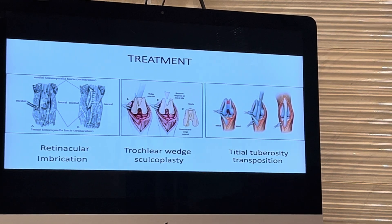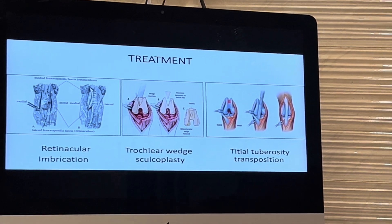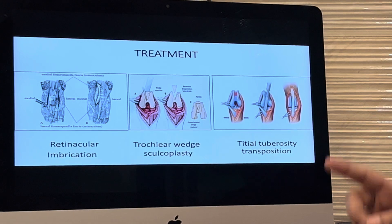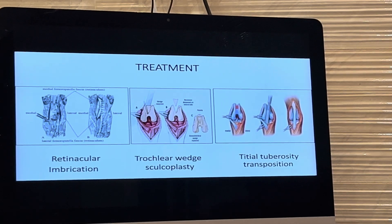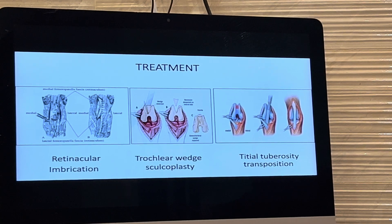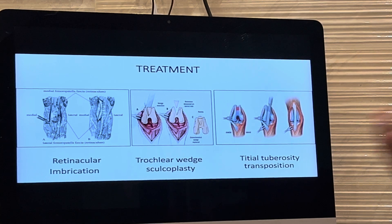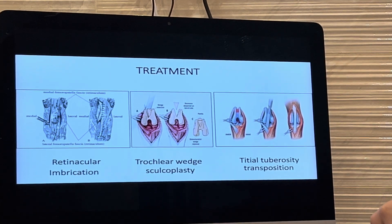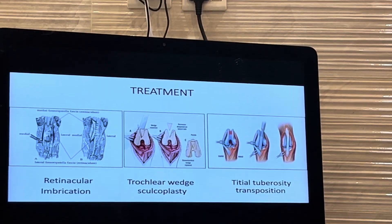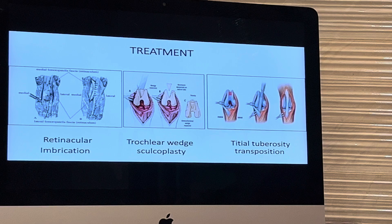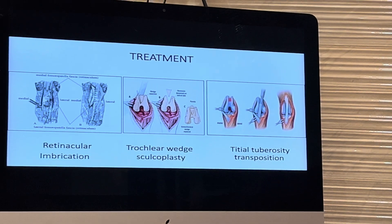Coming to the treatment aspect, we have different ways of treatment. For a basic grade 1 patellar luxation, retinacular imbrication is a technique where we put simple interrupted sutures on the opposite side of the luxation. Suppose the patella is luxated on the medial side — we reposition it back into the trochlea and put stay sutures on the lateral aspect, so the retinaculum holds the patella back into position.